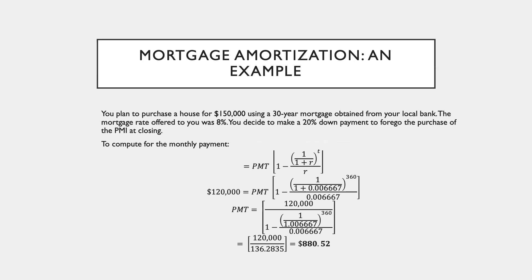So how do we compute the monthly payment? We use the formula on screen. We can actually substitute values; we are looking for PMT. We already know the value on the other side, which is $120,000. So we apply based on the given: $120,000 equals the monthly payments, which in this case is X.